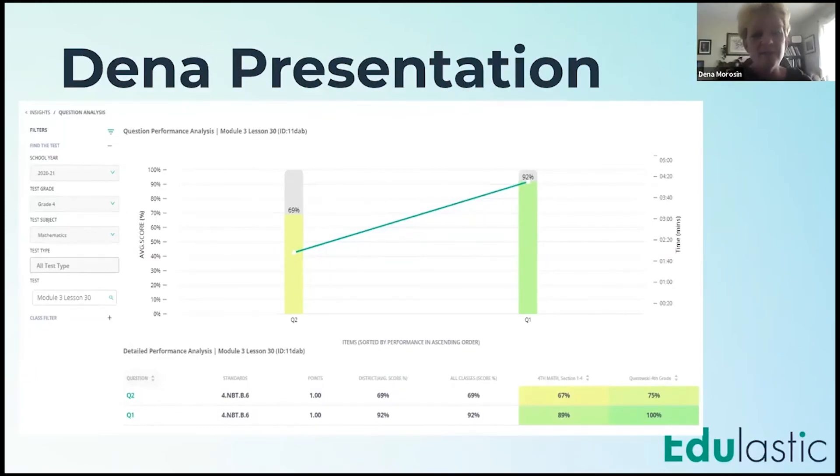So the thing that I loved about this is it's the same standard, but for some reason, my kids did really well on question one. 92% of my kids got question one right, and then question two, less than 70% got the question right. So for me, this was a flag as a teacher. I went in and specifically looked at these two questions, and so the first question was a simple division. It was a three-digit divided by one digit, and 92% of my kids got that, and I'm like, yes, that's great.